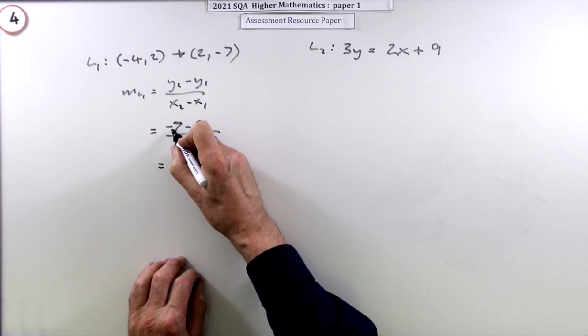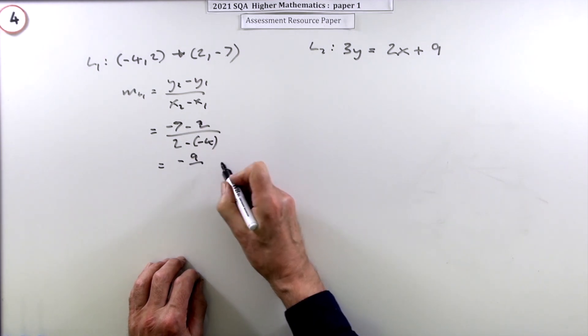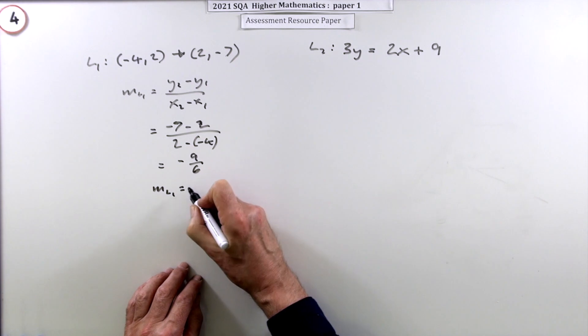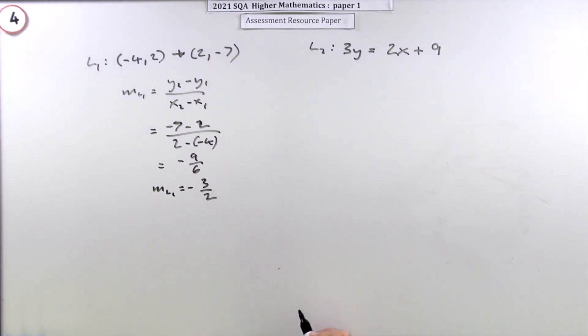So that becomes negative 9 upon 6. I better take that all the way down because they like to have things cancelled, so it's negative 3 upon 2. So you know what you're looking for here: you're looking for 2 upon 3.